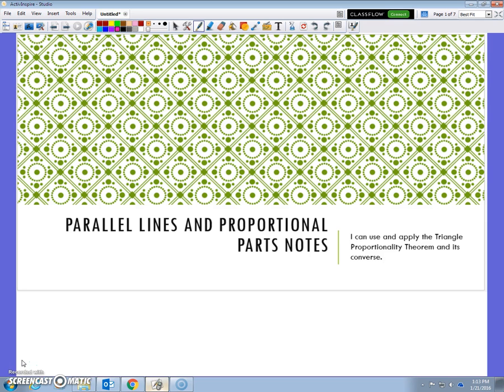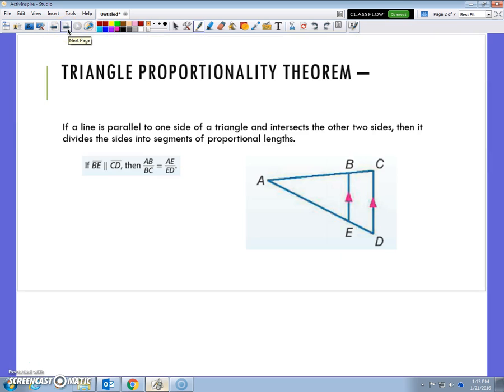We're going to learn a theorem about the proportionality of those types of triangles, and we're going to be able to solve for variables or find missing sides a little easier after this theorem. The triangle proportionality theorem says that if you have a diagram like this, and AE is parallel to CD, then it divides the sides into segments of proportional lengths.